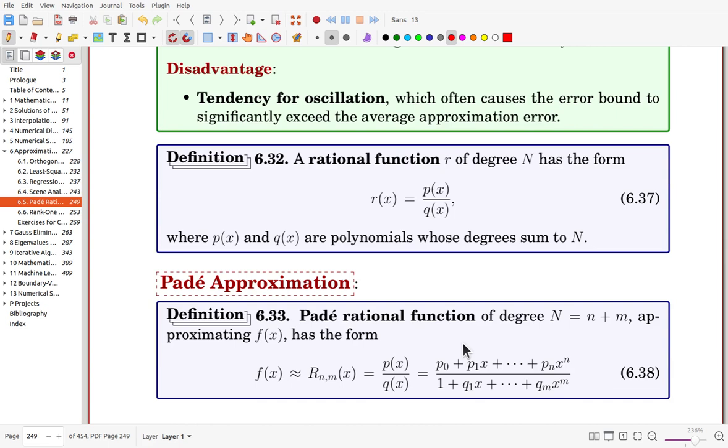Rational function of degree n, which is n plus m, in this form. This Padé rational function will be an approximation. Now in this form, top has degree n, and the denominator has degree m.